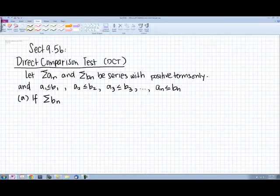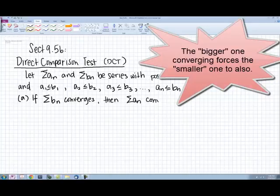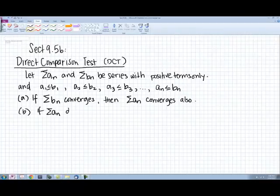If the series b sub n converges, it is going to force our smaller series to converge also. Likewise, if our smaller series, a sub n, diverges, then our bigger series, b sub n, diverges also.